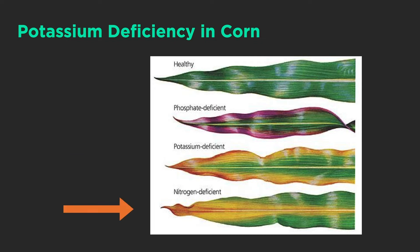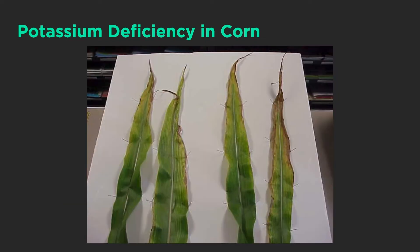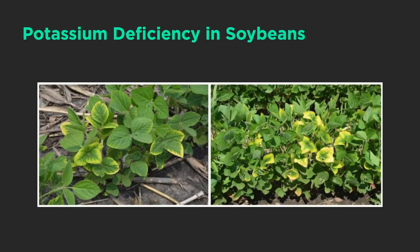This is going to be the opposite of nitrogen. Nitrogen deficiency shows up in the middle of the leaves, while potassium is on the outside. Usually you'll see that yellowing and firing on the outside edges. Here are some leaves that show really nice potassium deficiency from the field. With soybeans you get the same thing — it's always on the outside edges, you're going to get that yellowing.